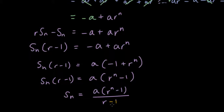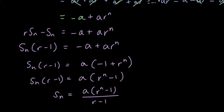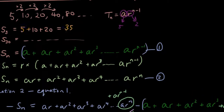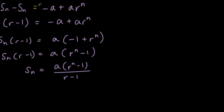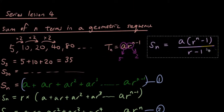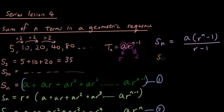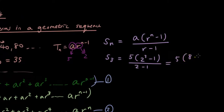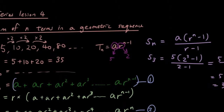Let's test if that works with our S3, where the answer was 35. Using the formula: S3 equals a which is 5, times (2 to the power of 3 minus 1), divided by (2 minus 1). That's 5 times (8 minus 1) over 1, so 5 times 7 which is 35. And that's exactly what I had doing it manually.